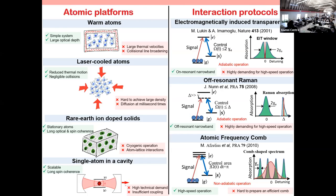Looking at interaction protocols — EIT and Raman schemes are very good for storing long pulses but are not suitable for short pulses because of their adiabatic operation. The atomic frequency comb approach is very good for storing broadband light, but preparing the system is very difficult. After almost two decades of research on quantum memories, there is still no suitable combination of platform and protocol for a high-performance quantum memory.